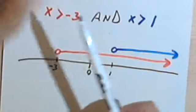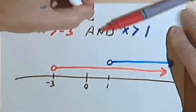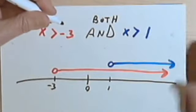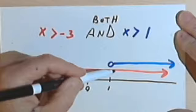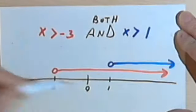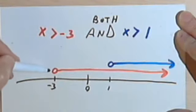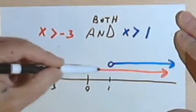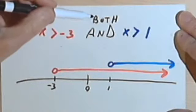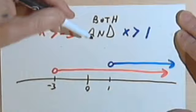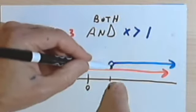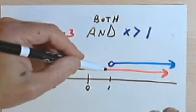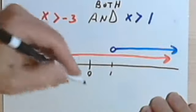Now remember, for AND, it means I have to have both of these conditions. So I have both of the conditions over here to the right of the 1. To the left of the negative 3 I don't have anything. To the left of the 1, in here between negative 3 and 1, I only have one condition and I need both. I need to have AND. So the only place I'm dealing with is every place to the right of 1, every place that's more than 1.